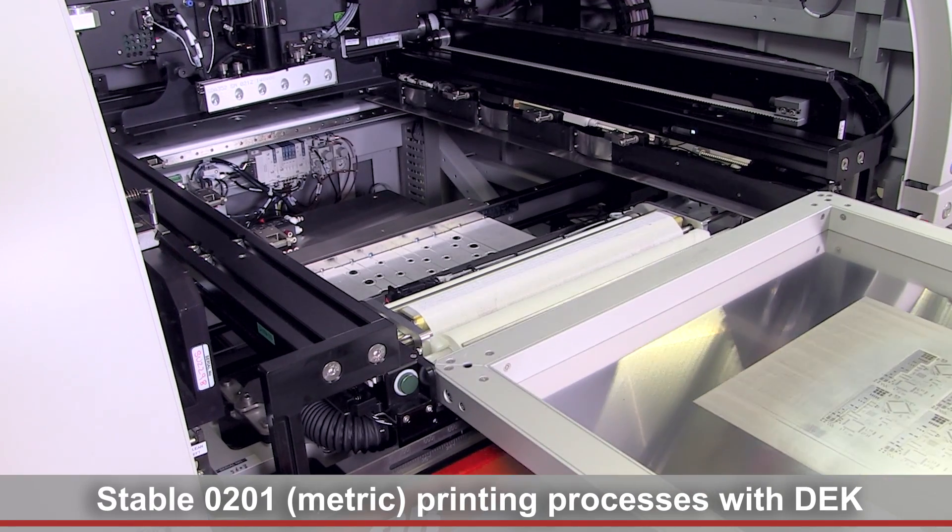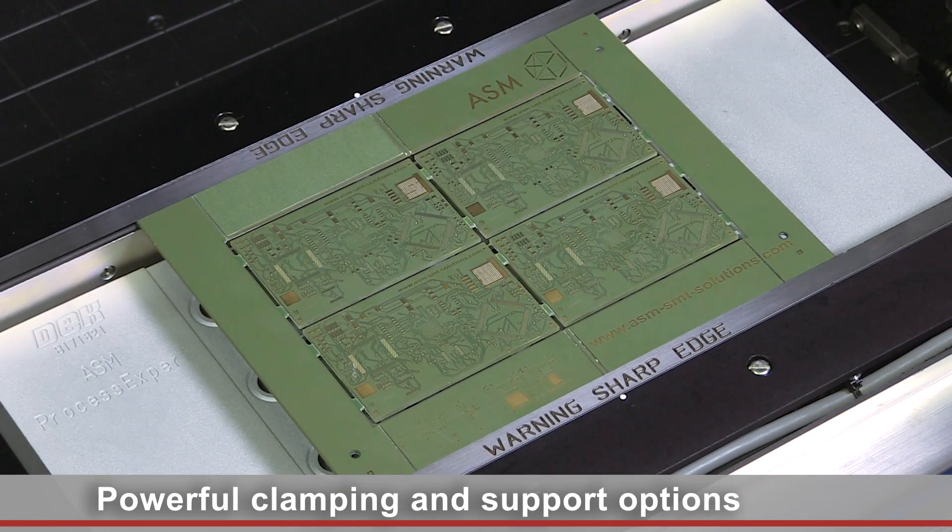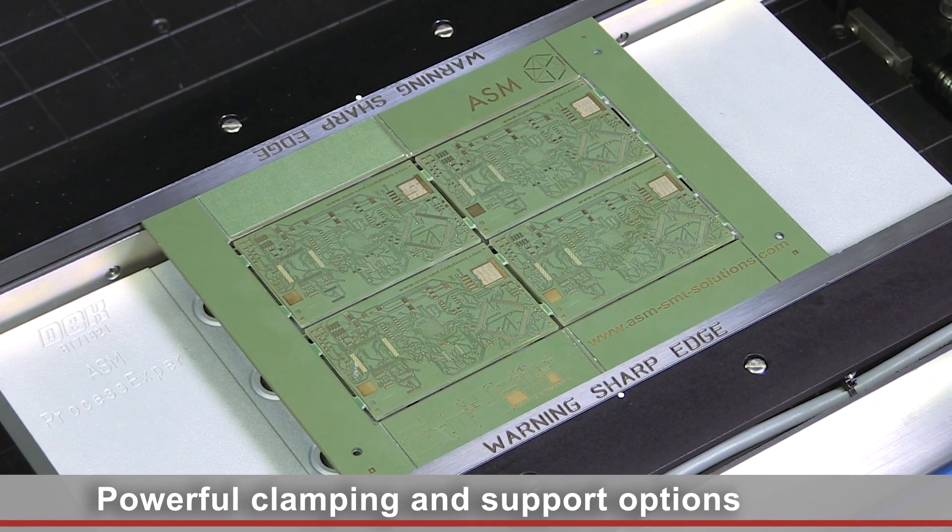Our modular DEC printer platforms, like the DEC NEO Horizon iX printer, as well as our powerful clamping and support options, ensure stable 0201 printing processes.